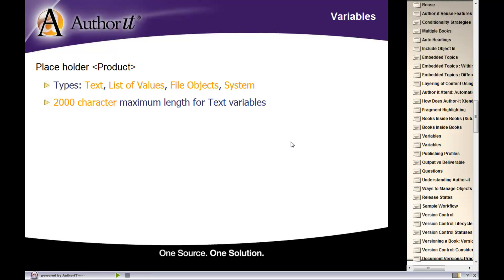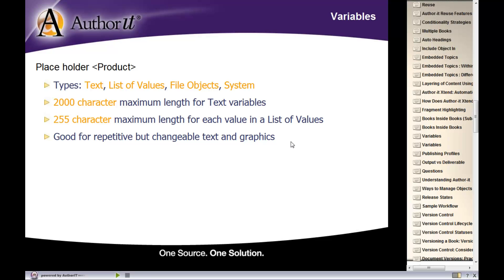Some other things to know about variables: when working with text-based variables, you can add up to 2,000 characters as your text assignment, so they can be quite large. Each list-of-values assignment can be up to 255 characters, so you're not limited to just one or two words — you can type entire paragraphs if needed. The key thing to keep in mind is that variables are great for repetitive but changeable text and graphics — basically placeholders for a value you want to set at the time of publication.